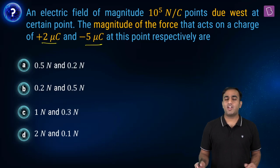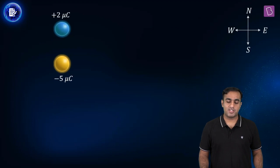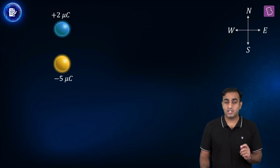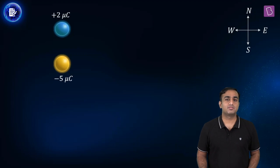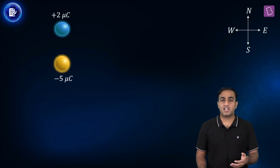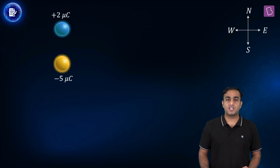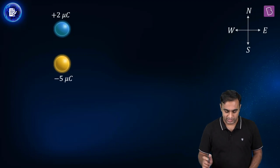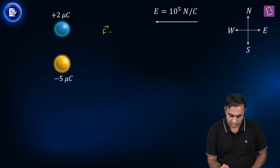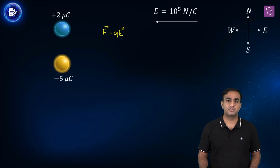To answer this, we go back to how we define the electric field vector. It is defined as the force experienced by a unit positive charge at that position. If you place a positive charge there, it experiences a force along the direction of the electric field vector. If you place a negative charge there, the force is opposite to the electric field vector. Mathematically, this is written as vector F equals Q times vector E — be careful, these are vectors.